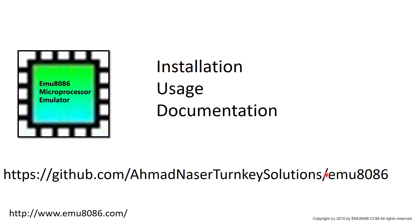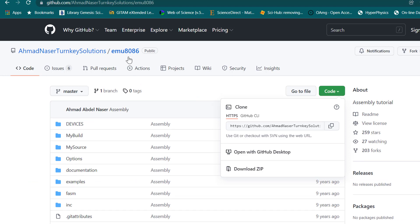The emulator I'm going to use for the rest of the course is emu8086. You can go to this GitHub page to download emu8086 — you get a 15-day trial version of the software. I'm going to show you how to install it, how to use it, and what documentation is associated with this software. Of course, you can also find it in other places — if you type emu8086 in Google, you'll get other places where the software is available.